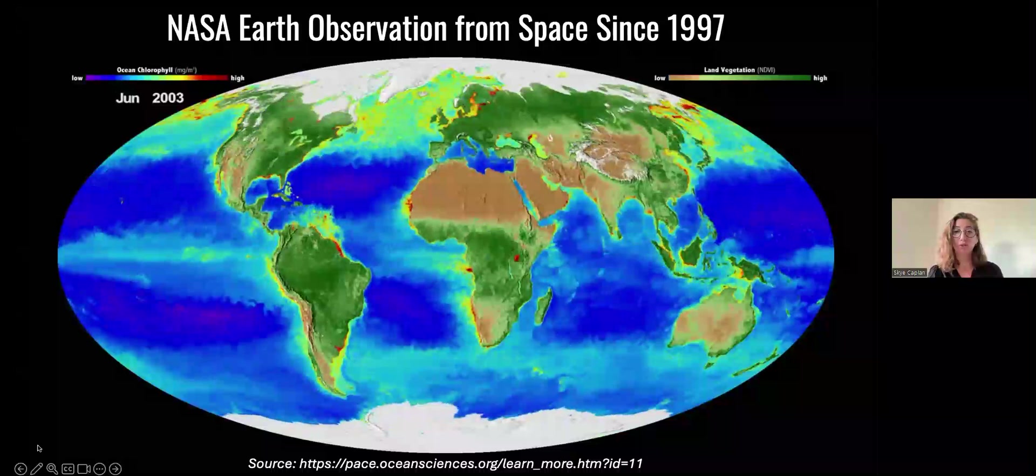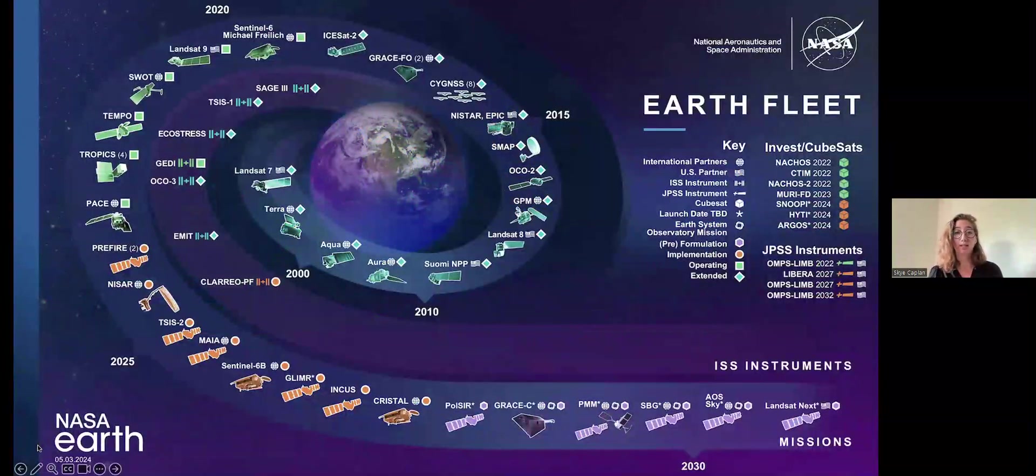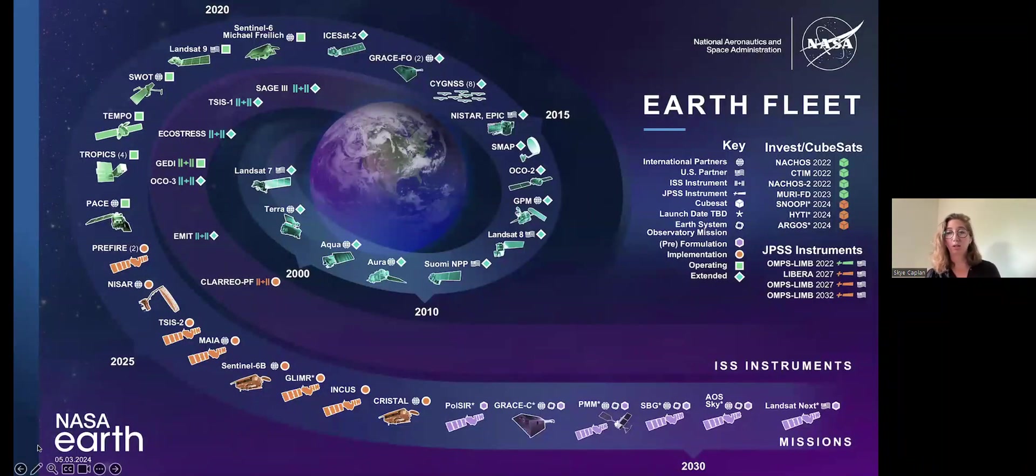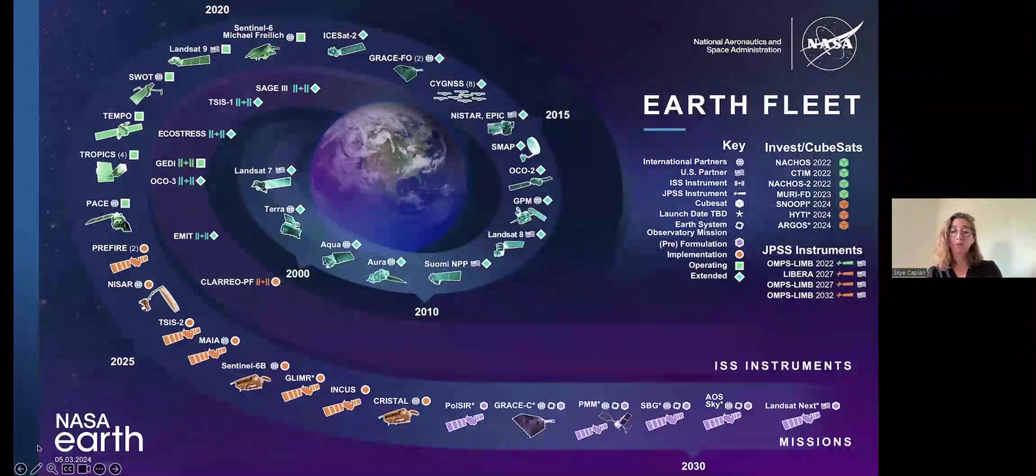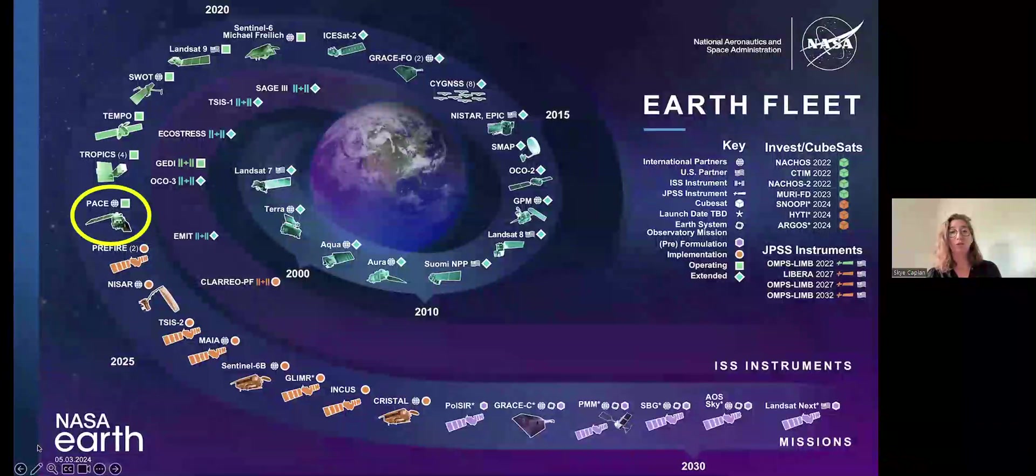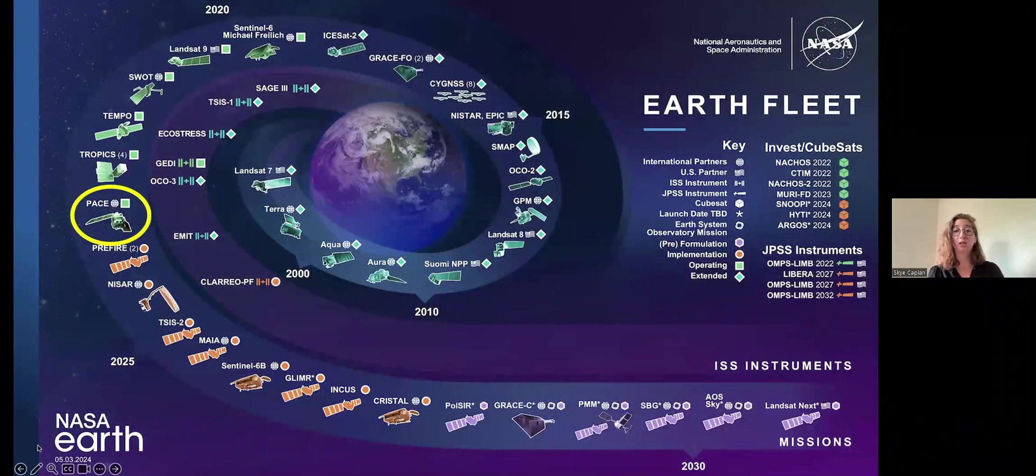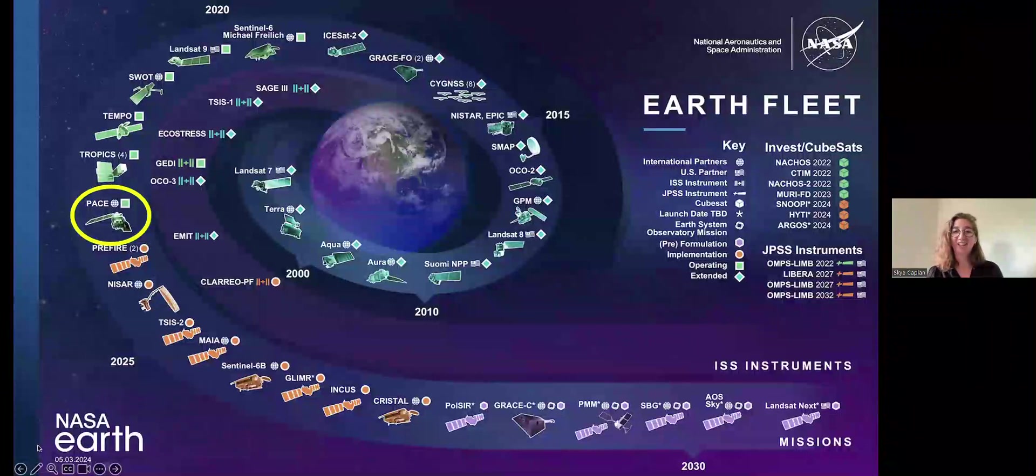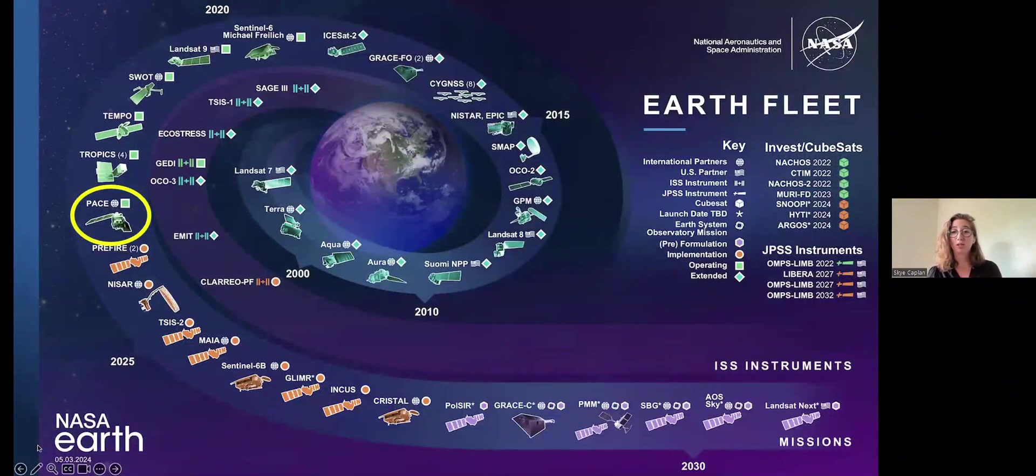I included this slide just to show you all how many Earth focused missions NASA has been involved with even just since 2000 and how many more are actually planned into the future. So at the bottom there, you can see it goes all the way to 2030 and beyond. Now, the important one for today is called PACE. We launched February 8th of this year, and I was actually very fortunate to get to attend that launch. And we also just started releasing data in early April, which has been super exciting to be a part of.